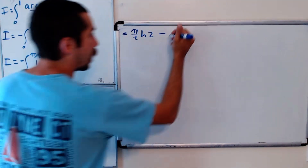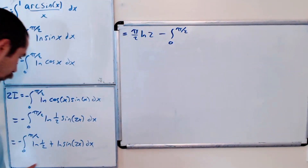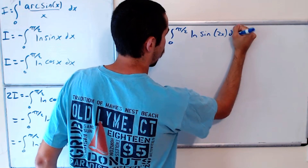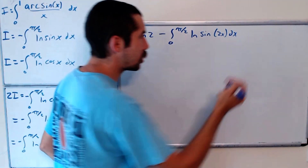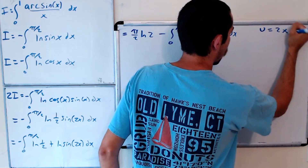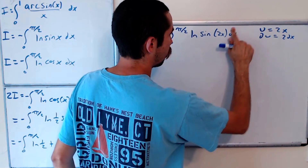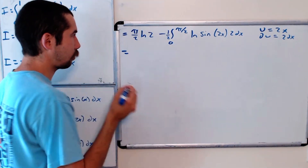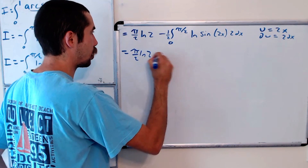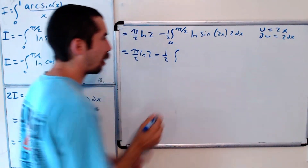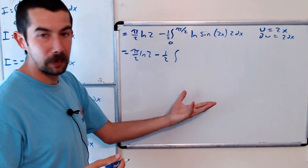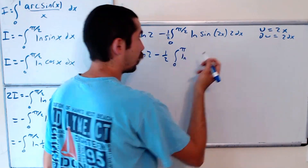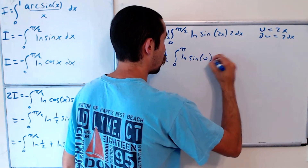Then we subtract the integral from 0 to pi over 2 of ln of sine of 2x dx. Let's do the substitution u equals 2x, so du equals 2 dx. Adding a factor of 2 dx costs us a one half out front. Our new bounds go from 0 to pi, giving us pi over 2 ln 2 minus one half the integral from 0 to pi of ln of sine of u du.